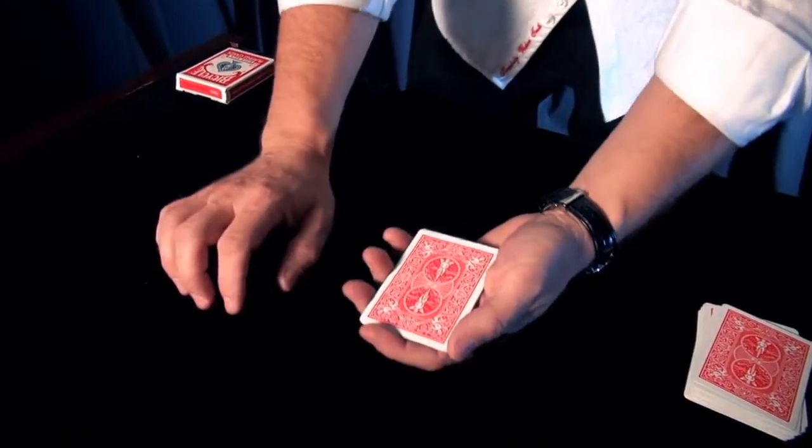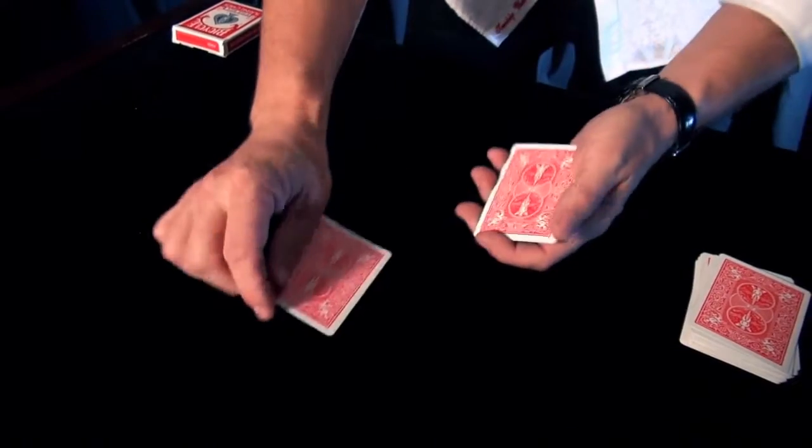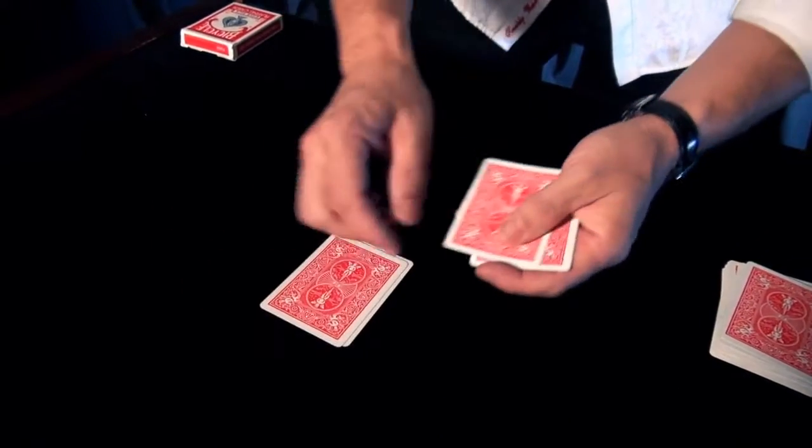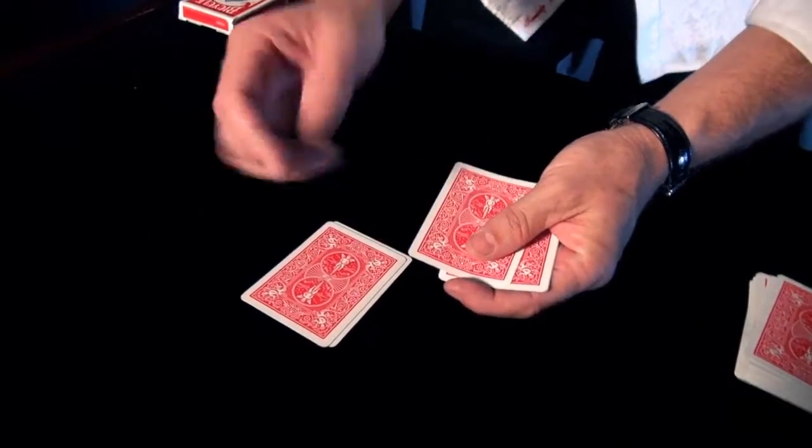The first technique that we can use is called a crimp. And here's what a crimp is. A crimp is when you place a tiny bend in the corner of a playing card. Now, why is that important?